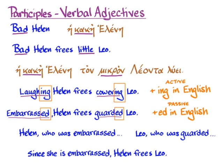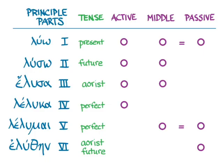Now that we've thought a little bit about how participles work in English, let me give you a preview of the Greek participle system, which is quite thorough. Greek has participles in the present, future, aorist, and perfect tenses in all three voices, and they will come from the principal parts you're used to. Everything present will come from principal part one; future active and middle from principal part two; aorist active and middle from principal part three; the perfect active from principal part four; the perfect middle and passive from principal part five; and the aorist passive and future passive participles from principal part six.